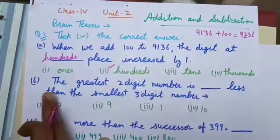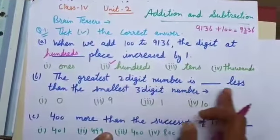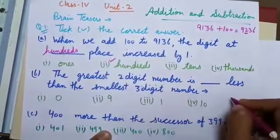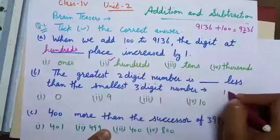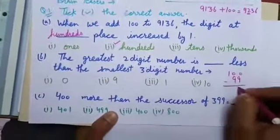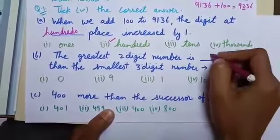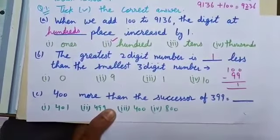Now come to part B. The greatest 2-digit number is blank less than the smallest 3-digit number. Greatest 2-digit number is 99 and the smallest 3-digit number is 100. Find the difference. Difference is 1. It means the greatest 2-digit number is 1 less than the smallest 3-digit number.